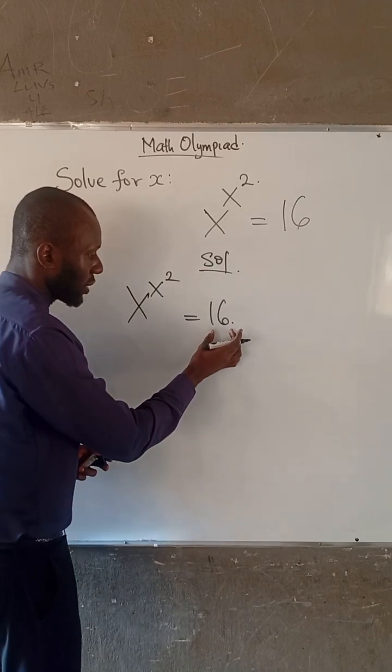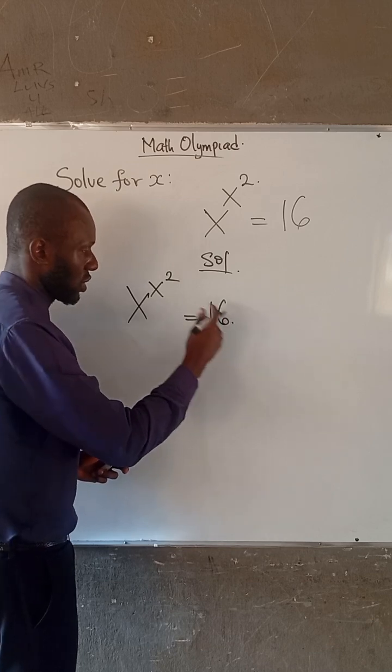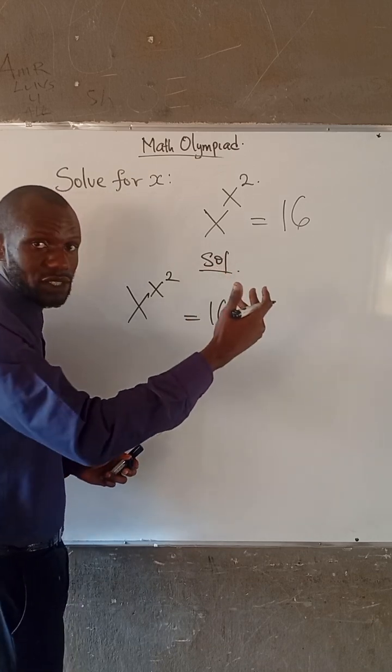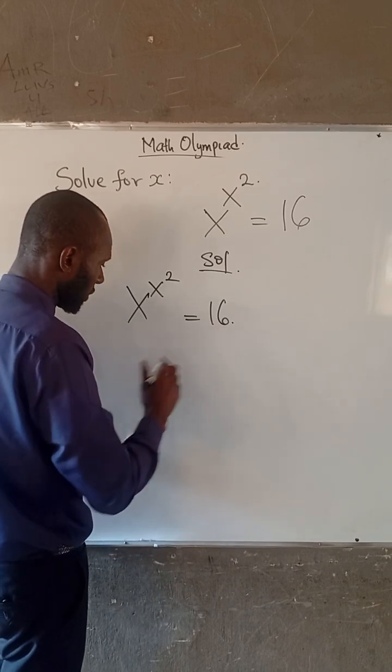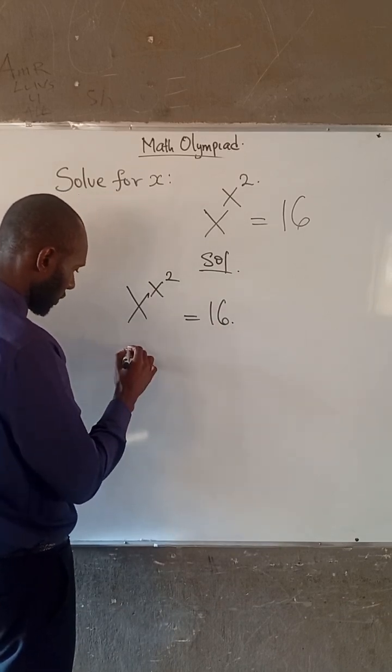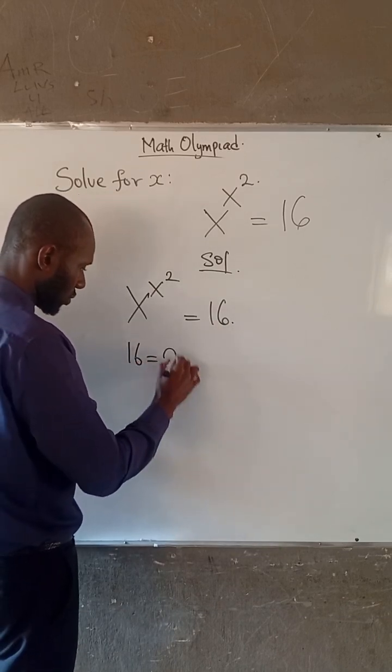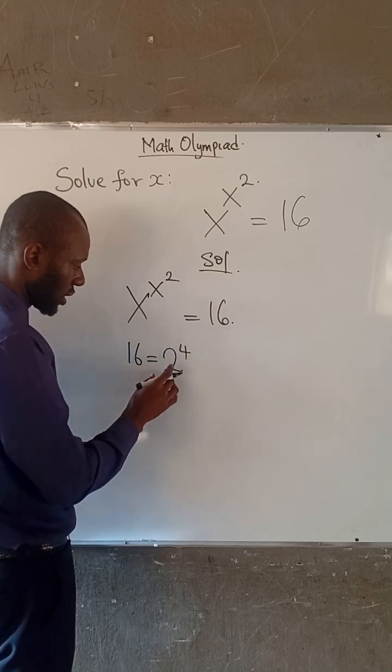Is there a way we can express 16 to have an index of an index? Therefore, let's see. If we have 16, which is equal to 2 to the power of 4, that would be 16.